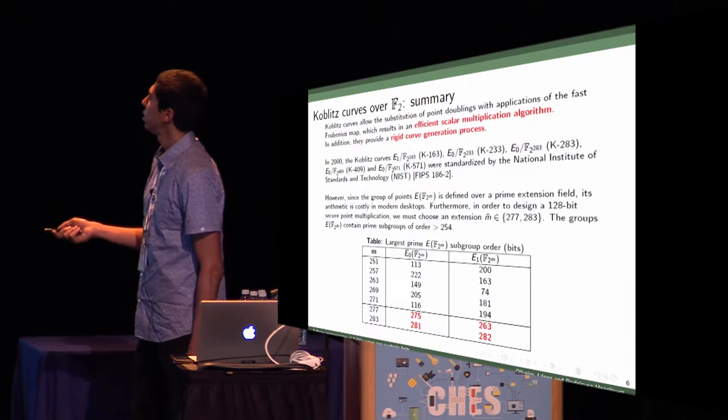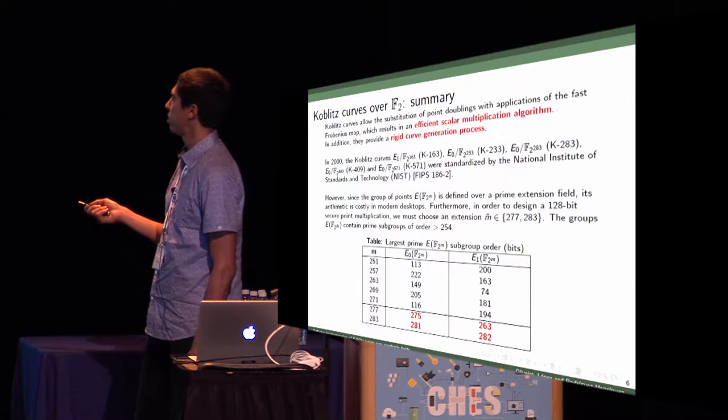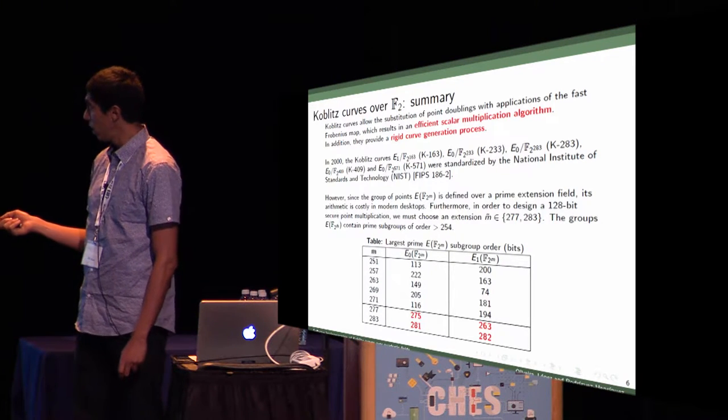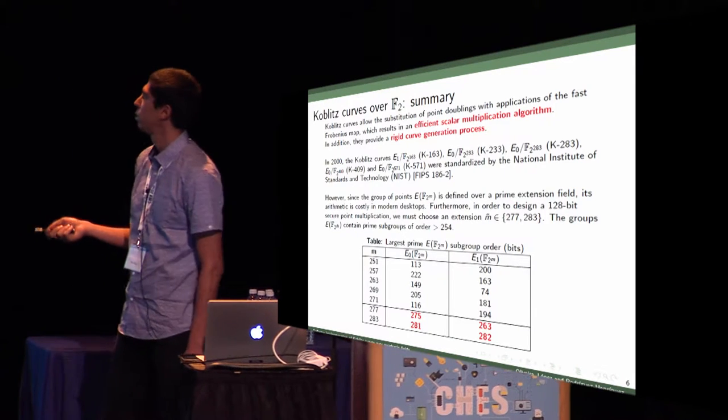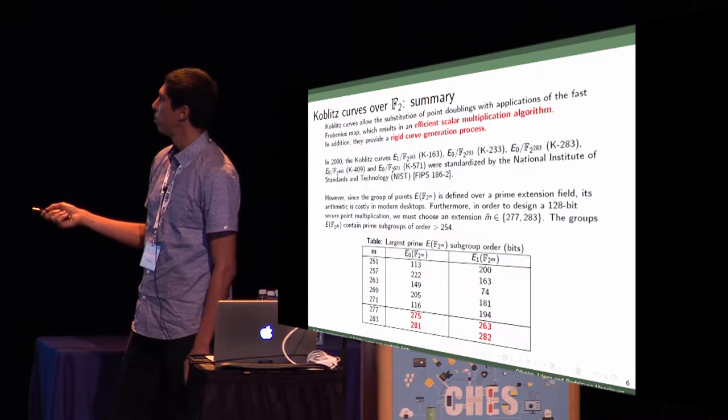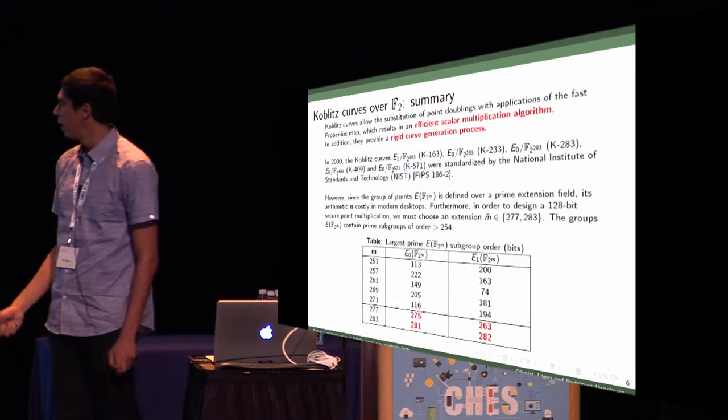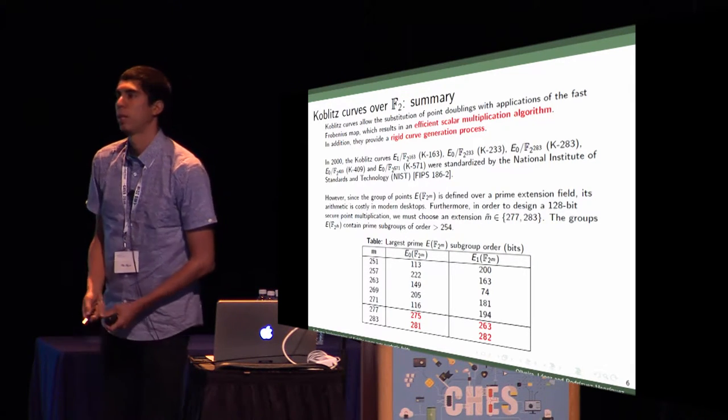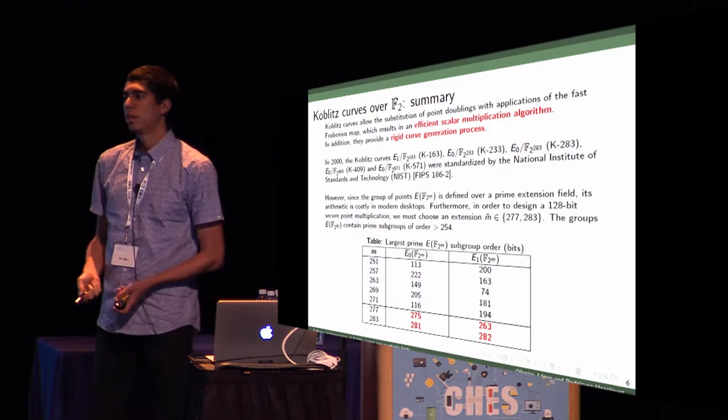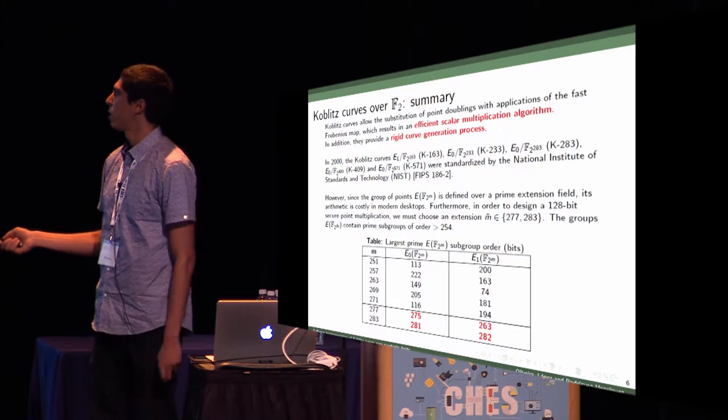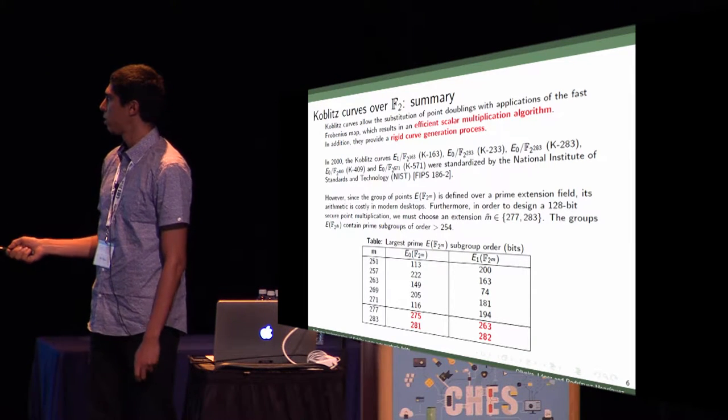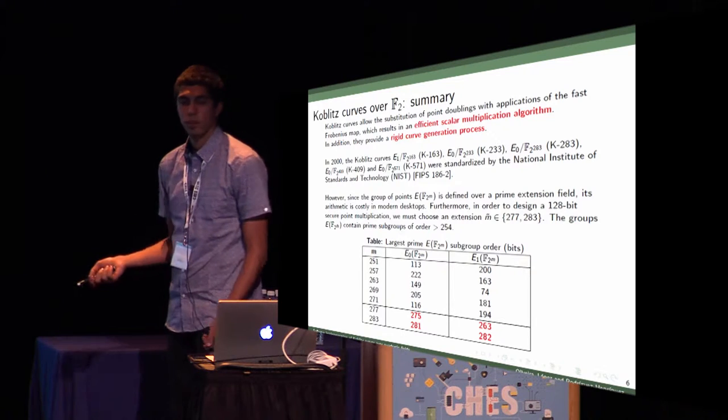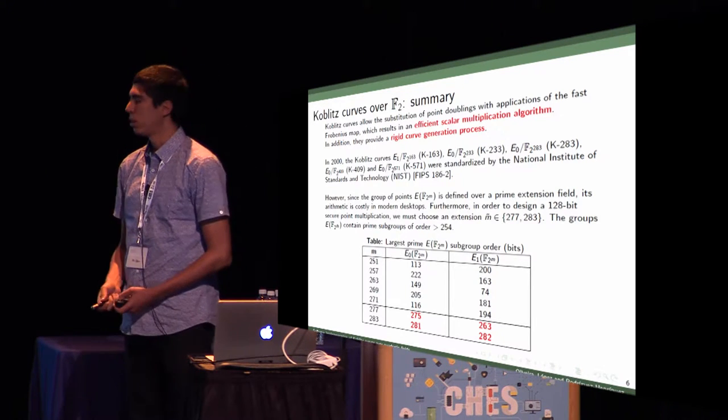However, there are two problems with these curves. First, because it's defined over a prime extension field, the arithmetic is somewhat costly in modern desktops. Also, if you want to design a 128-bit secure point multiplication, you must choose an extension at 277 or 283. These subgroup orders are more than required to generate 128-bit security. We need more iterations in the main loop to implement such security level, because all extensions below that do not have a subgroup order that can provide 128-bit security.